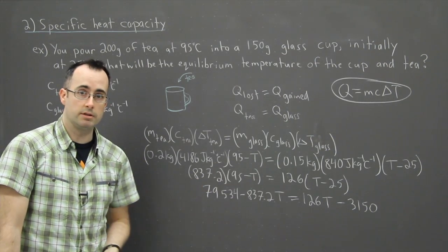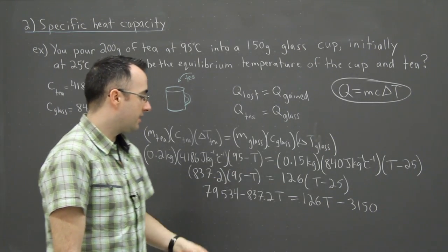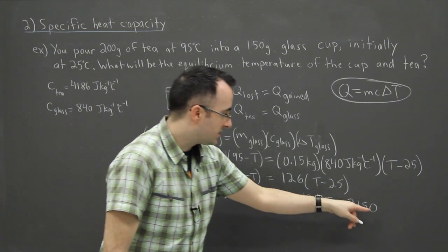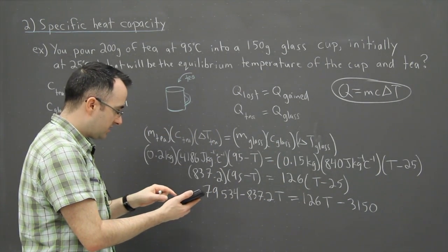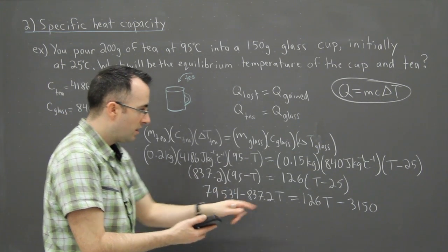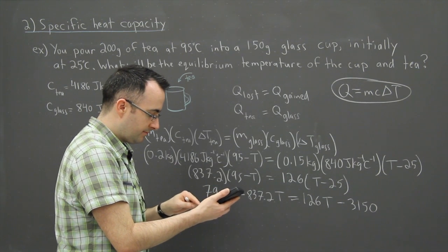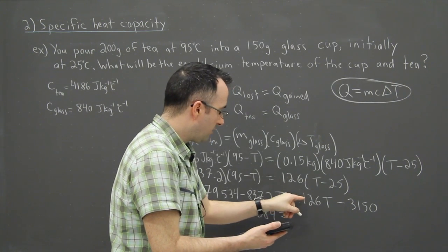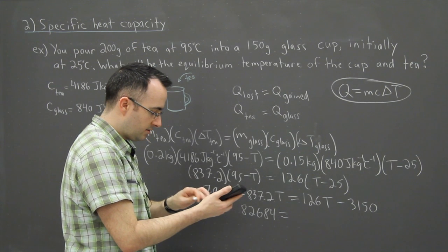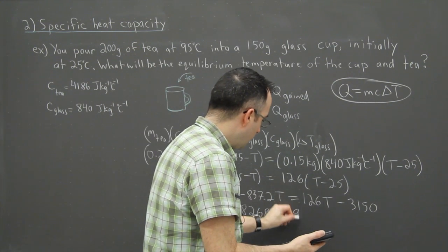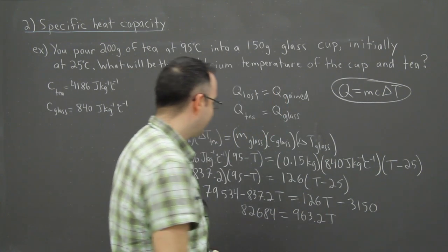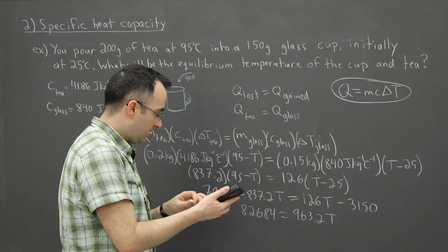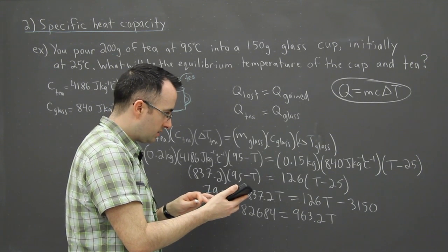This is just now a matter of calculations. I want to get my T's on the same side. Because I have minus 837.2T, I'm going to move that one over by adding it, and I'm going to take this one away over here. I'm going to do this all in one step: 79,534 plus 3,150 gives me 82,684 equals 126T plus 837.2, so that's 963.2T. And then I want to get T by itself, so I'm going to divide this by this.